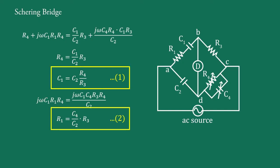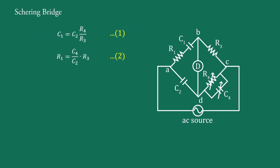These two equations represent the balance conditions of the bridge. These conditions are independent of frequency. They are satisfied by successive adjustment of R4 and C4: adjusting R4 sets the first balance condition, and adjusting C4 sets the second. The value of capacitance C1 can be calculated from Equation 1. When the bridge is balanced, minimum sound is heard in the headphones or maximum deflection is obtained on the null detector.